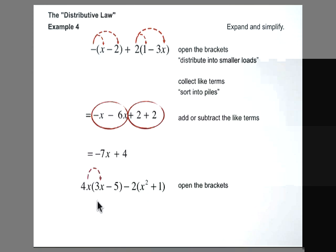Open the brackets. 4x times 3x. 4 times 3 is 12. x times x is x squared. Because whenever an exponent is missing, it's 1. 1 plus 1 is 2. Because when we multiply variables, we keep it the same and add the exponents.